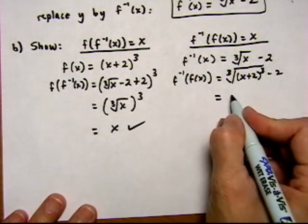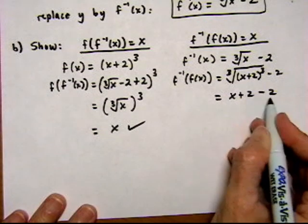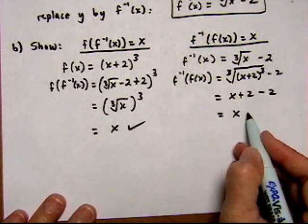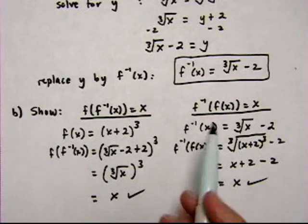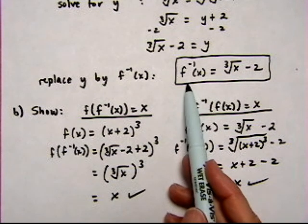So now cube root of a cube gives us the insides, x plus 2, bring down the minus 2. 2's cancel out. And yes, we get x as our final output, which is what we would expect for inverse functions, because they undo each other. So this is our inverse function of f(x).